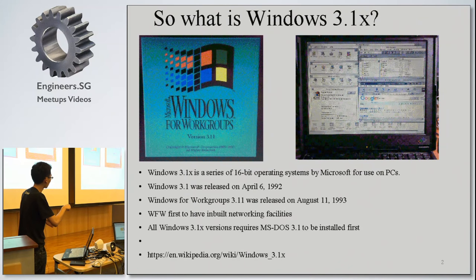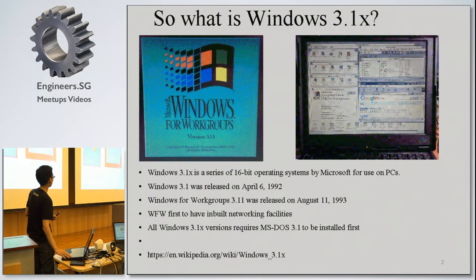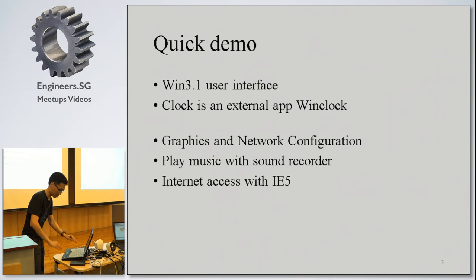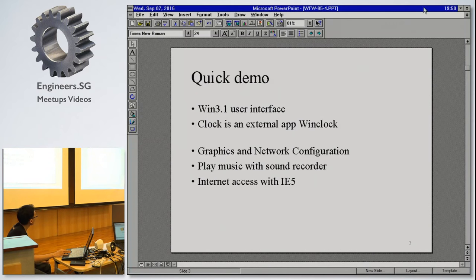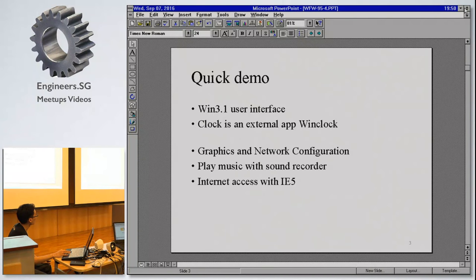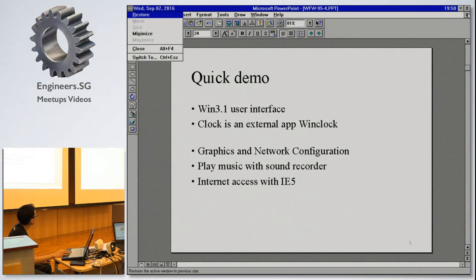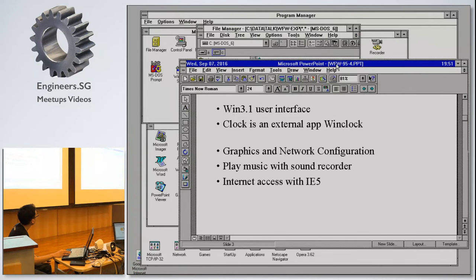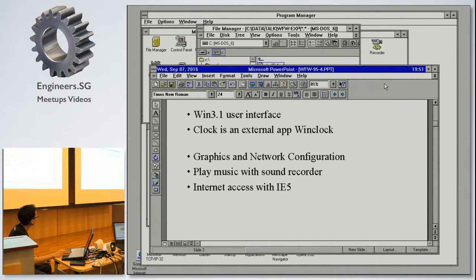Windows for Workgroups was the first to have networking capabilities, and it requires MS-DOS to install. Let me do a quick demo. Unlike modern Microsoft operating systems where you normally have minimize, restore, and close at the top — here the restore button, minimize, and close work differently. You click here to close.